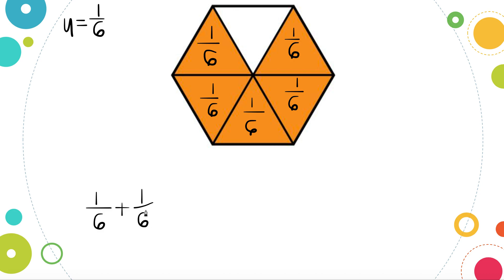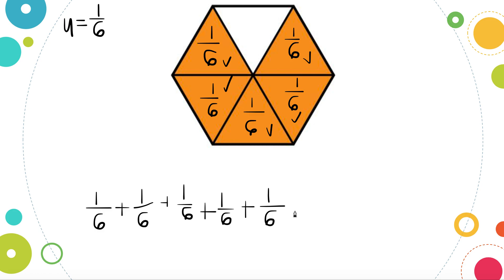So we have one-sixth plus one-sixth. I'm going to check off as I count them, adding one more sixth each time. When we add all of these pieces together, it gives us the answer for how much is shaded in. Remember, when we add fractions with like denominators, the denominator always remains the same because we are staying with sixths, so we add our numerators together.